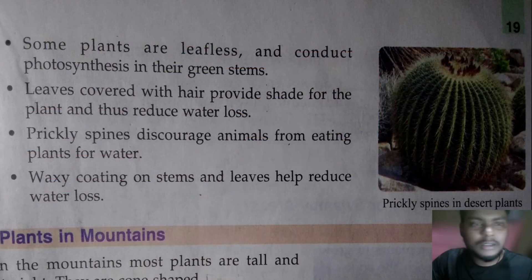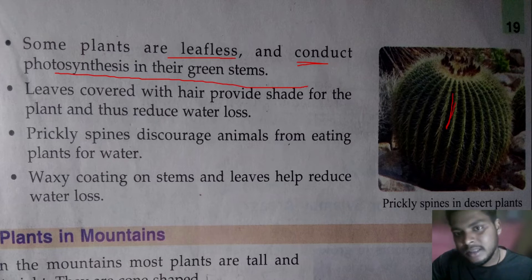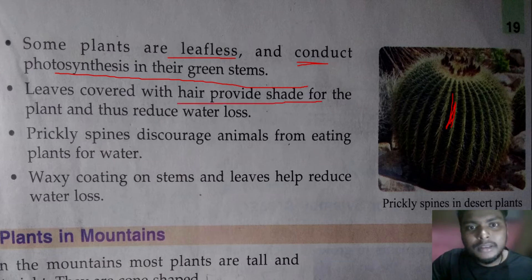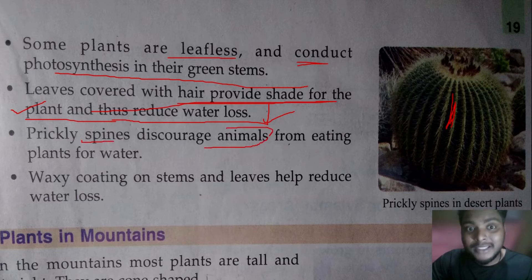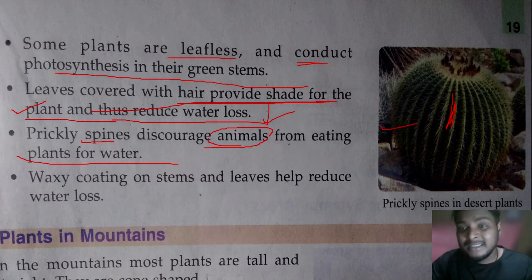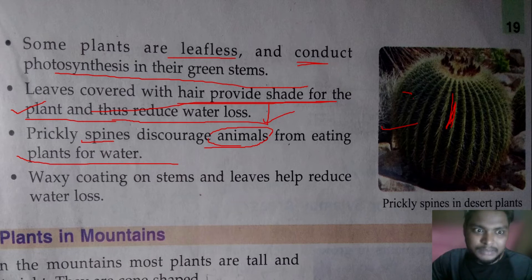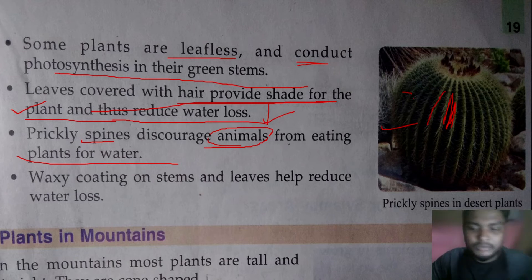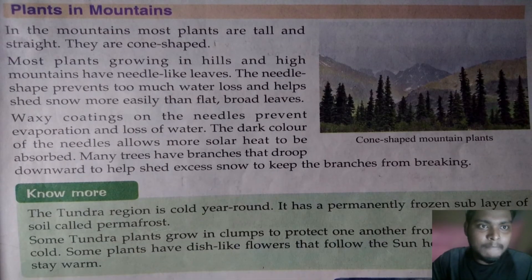Some desert plants are leafless and conduct photosynthesis in their green stems. The stem's surface helps reduce water loss. There are also spines that discourage desert animals like camels from eating those plants, since animals may approach to get water. A waxy coating also covers the stem and leaves of these plants to further reduce water loss.